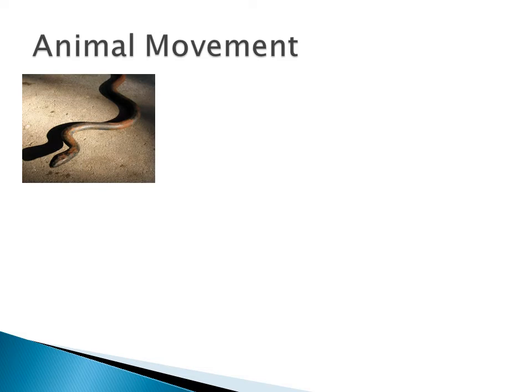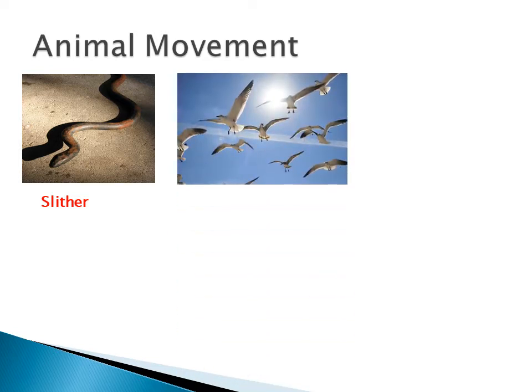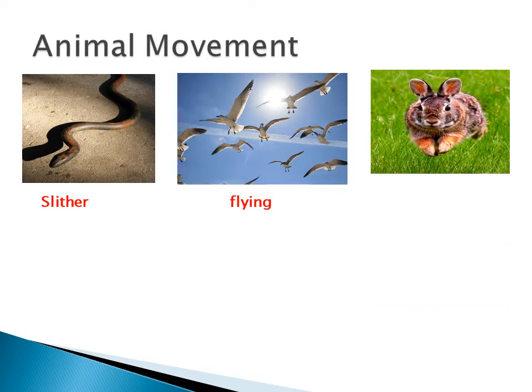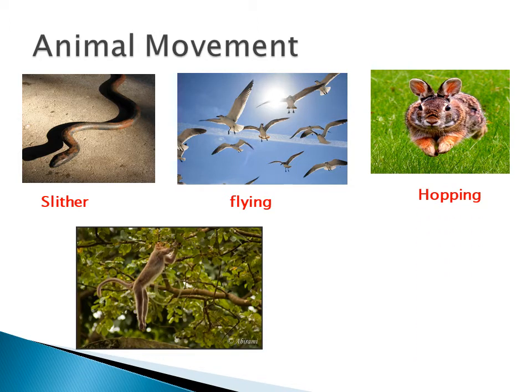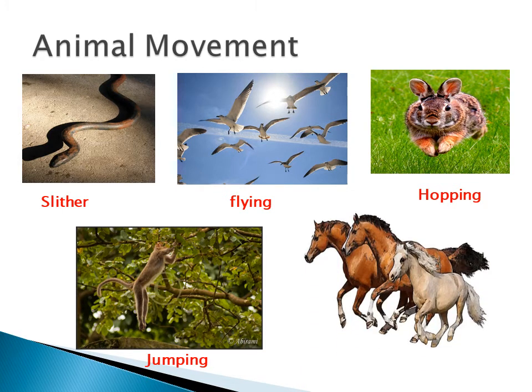There are different kinds of movements for animals. The snake can slither. The birds are flying in the sky. The rabbit hops. The monkey jumps from one tree to another tree. And the horses are running. So they are living things — they have to move. But non-living things cannot move.